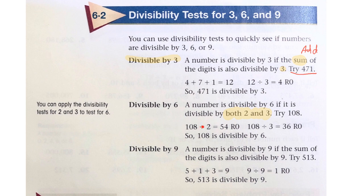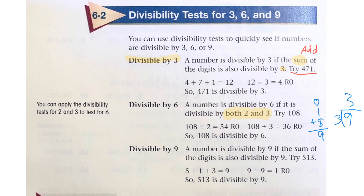Something is also even if you can divide it by 2 with no remainder. So 108 divided by 2 is 54, no remainder — it is divisible by 2. You can also use the digit-sum trick: 1 plus 0 plus 8 is 9, and 9 divided by 3 is 3. So we can divide it by 3. Therefore, 108 is divisible by 6 because it is divisible by both 2 and 3.